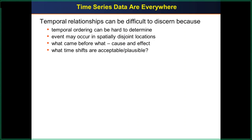Events may occur in spatially disjoint locations, and that's very difficult because you don't know what came before what and what caused the other, because they happened at spatially disjoint locations. You don't know if the cause could have traveled far enough to cause an effect in a different location. So you don't really know if there's a logical ordering to these time events, or if they're completely independent. Time also has something to do with space — not just distance. It's really hard to figure out which time shift is acceptable and plausible.